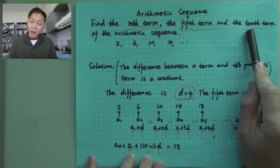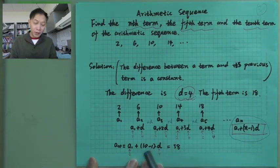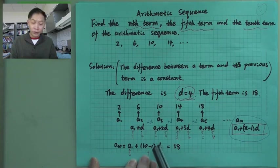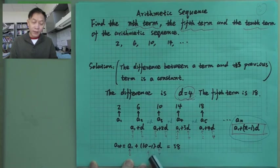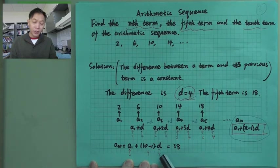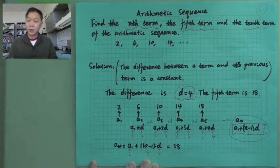What's the 10th term? The 10th term would be A1 plus (10 minus 1) is 9 times D. And you know A1 is 2, 10 minus 1 is 9 times 4. So then you have 36 plus 2 is 38, and that will be our 10th term.